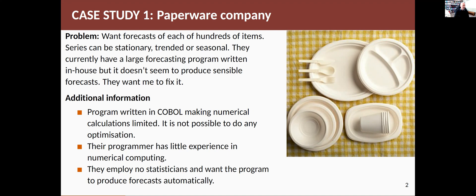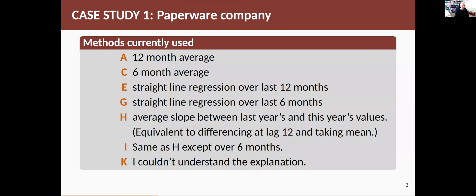By the end of the course you will actually know how to solve this, but it's quite a challenging problem because you can't just apply any tools available in R or some other language. You have to think about how to do it in a way that avoids numerical optimization. The methods they were currently using were given to me as a list — I've no idea what happened to methods B, D, F, and J. They were very simple things like taking the average of the last 12 months of data, or the last six months, or fitting a straight line regression over the last 12 or six months, or taking the average slope between last year's and this year's values. Method K I never figured out. And I had to come up with something better than those methods, which I did.